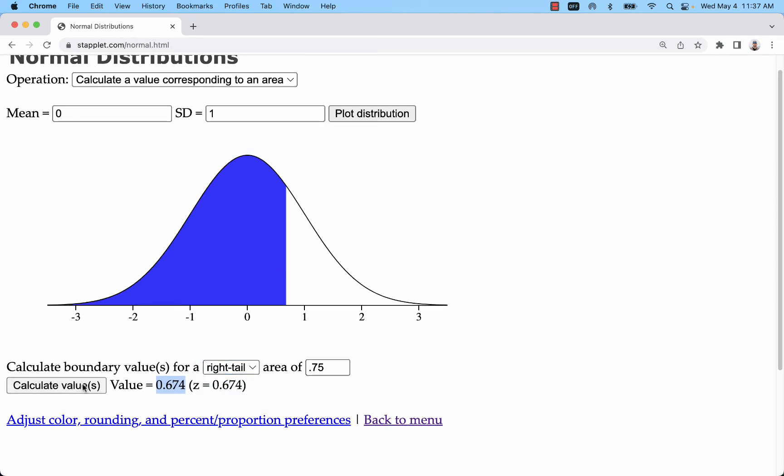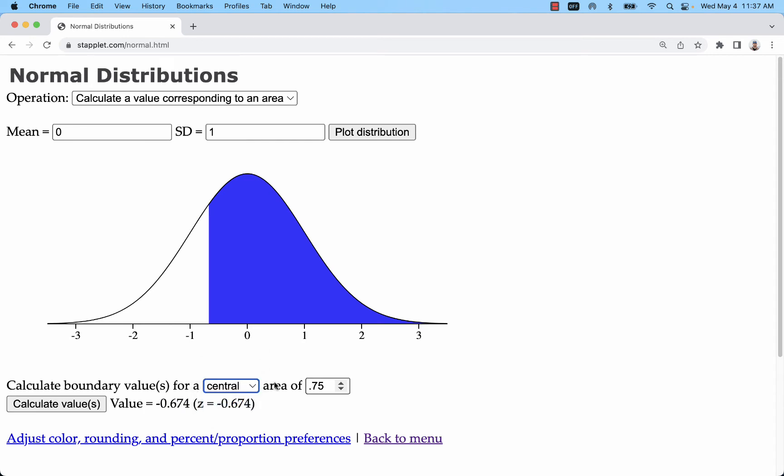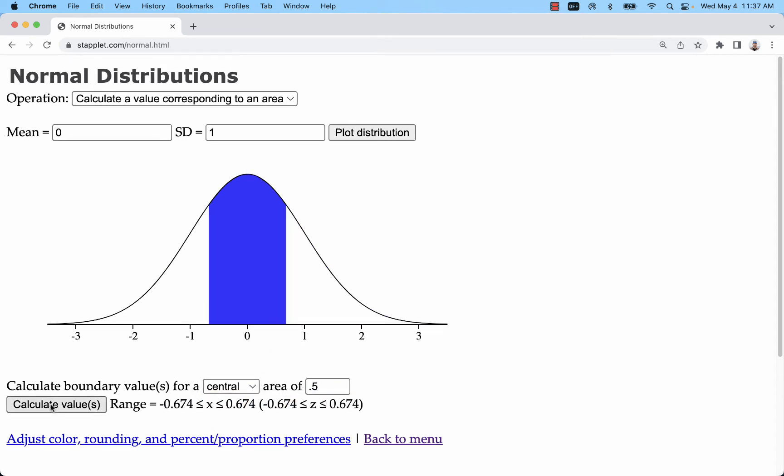You can do a right tail. You can do a central area. So, let's say I want to look at the middle 50%. Then that's going to be 0.5 in the center from negative 0.674 standard deviations to positive 0.674 standard deviations.